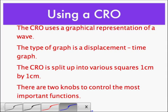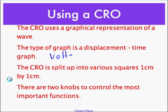The CRO uses a graphical representation of a wave. The type of graph is a displacement time graph. How does it measure it? It's actually voltage versus time, and the voltage is associated with displacement. So the greater the voltage created from your microphone or your speaker or the circuit, the greater your displacement of the wave. The CRO is split up into various squares, one centimeter by one centimeter, and there are two knobs to control the most important functions.